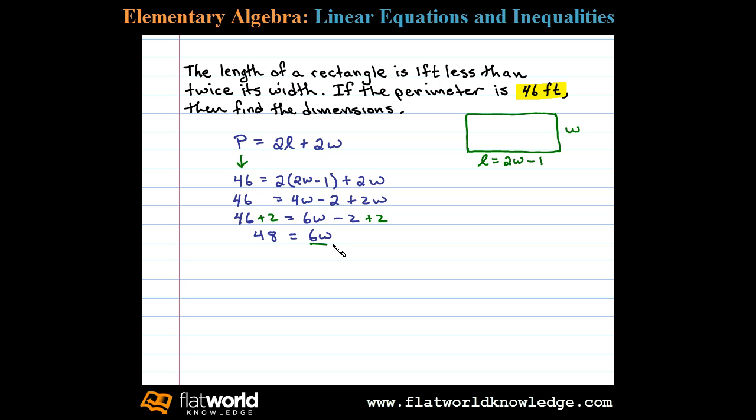To isolate the variable W, we can divide both sides by its coefficient, here 6, and that leaves us with 8 equals W. So that tells me the width is 8 feet.